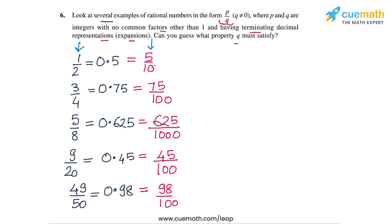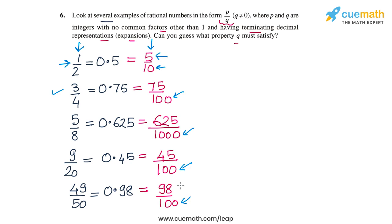For example, 1/2 is 5 by 10, in which the denominator is 10. Then 3/4 is 75 by 100, in which the denominator is 100. For 5/8, the denominator is 1000. And for both 9/20 and 49/50, the denominator is 100 again. Because each of these rational numbers can be written as an equivalent rational number with a denominator that's a power of 10, its decimal representation becomes terminating.